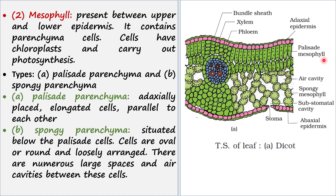There are two types of mesophyll cells: palisade parenchyma (or palisade mesophyll) and spongy parenchyma (or spongy mesophyll). Palisade mesophyll is placed at the adaxial end and its cells are elongated and parallel to each other. Spongy parenchyma is situated just below the palisade cells; these cells are oval or round, very loosely arranged, with numerous large air cavities between them.